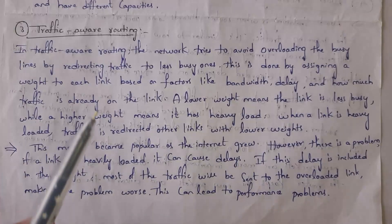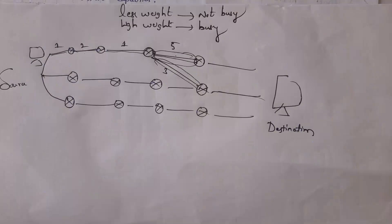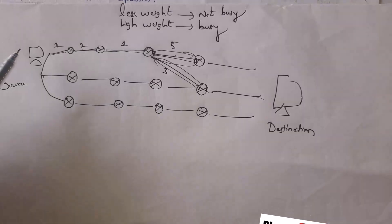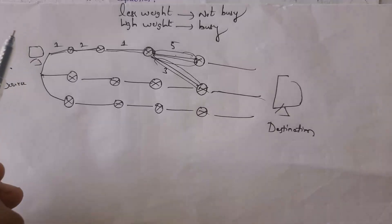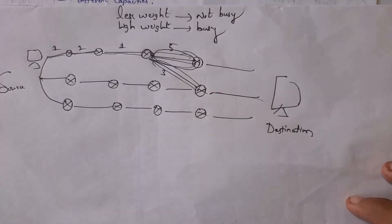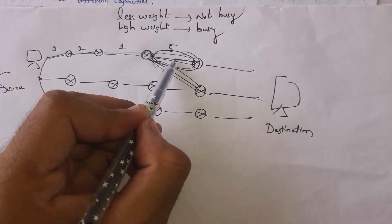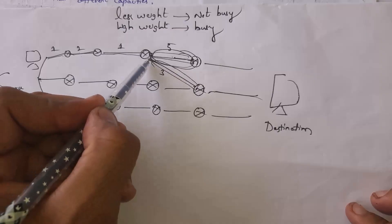The next congestion control approach is traffic-aware routing. In this technique, whenever a particular line is too busy, data will be transferred using another line. In traffic-aware routing, each link is given some weight — a lower weight means the line is not too busy, whereas a higher weight means the line is busy. For example, if a computer wants to transfer data and the particular line is busy, then data will simply be transferred using another, less busy line.